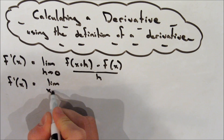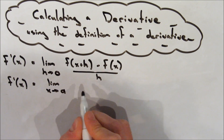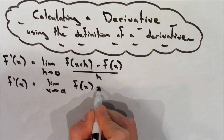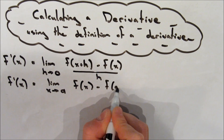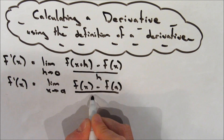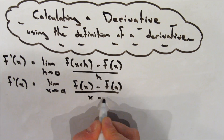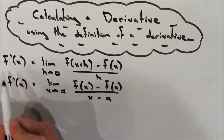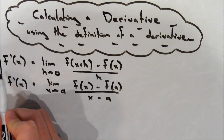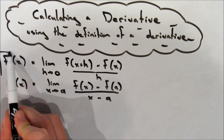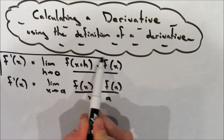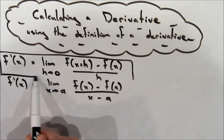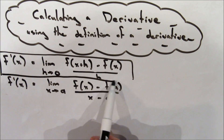There's also this alternate formula: f prime of x is equal to the limit as x approaches a of f of x minus f of a over x minus a. We'll talk about that in the other example video, but in this video we're going to do some examples using the first definition.